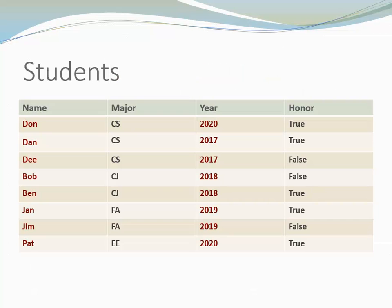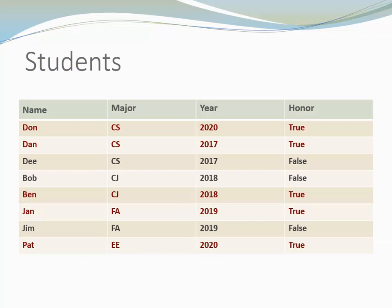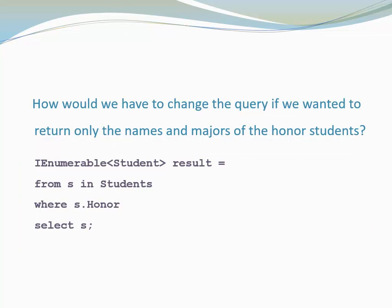When we look at the data, we can see that both the names and the years are included in the result. The select clause allows us to select the data of one or multiple columns, but what if we want to select one or multiple rows? That's where filtering comes in. The WHERE clause allows us to filter data — it determines which rows are part of the result. In this example, we only want to list honor students. You can see that all rows are selected where honor is set to true. For each of those rows, the full student information is returned, but sometimes we do not need all the information. We could use an anonymous type to return only the names and majors of the honor students.